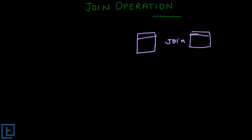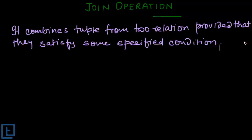Join operation is equivalent to the cross product followed by select operation. The definition says join operation combines tuples from two relations, provided that they satisfy some specified condition. We call this condition the join condition.